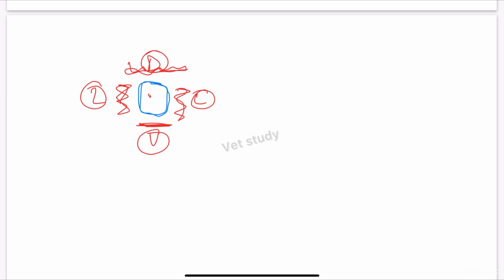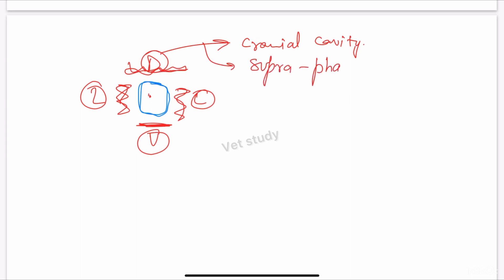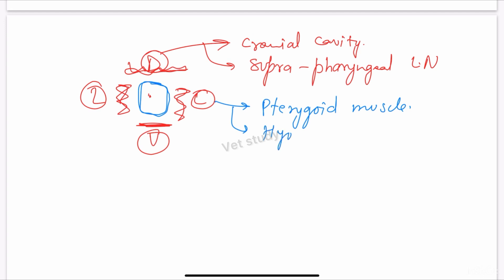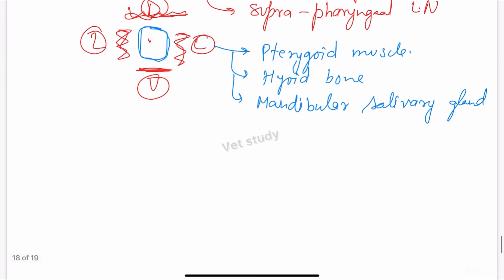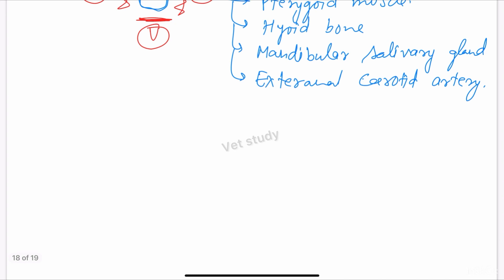Dorsally, two structures are present: the cranial cavity and the suprapharyngeal lymph nodes. Laterally, many structures are present such as the pterygoid muscle, hyoid bone, mandibular salivary gland, and external carotid artery.